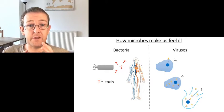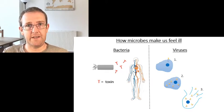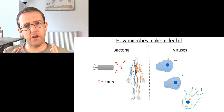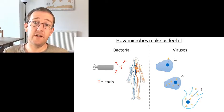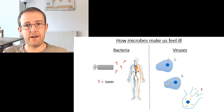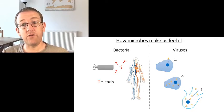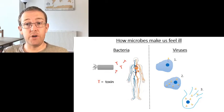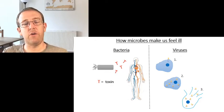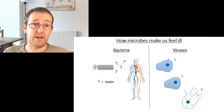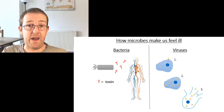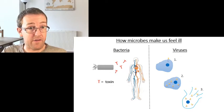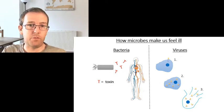Just as a recap - you should have covered this before - about the different ways pathogens make us sick. On the right hand side we've got viruses, which we've discussed in previous lessons. The way they make us ill: they get inside your cell, hijack your cells, make your cells produce more of them, then burst out destroying your cells and go on to infect other cells. The classic sore throat feeling is from burst and ruptured cells.